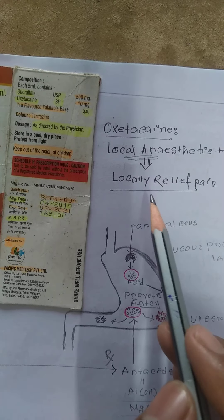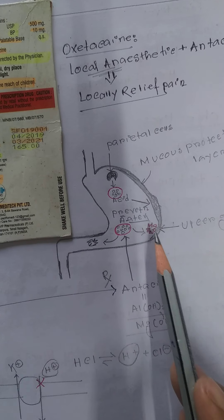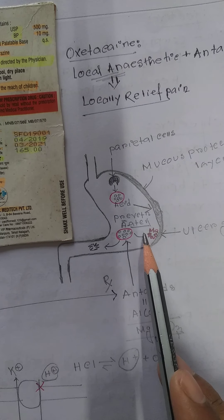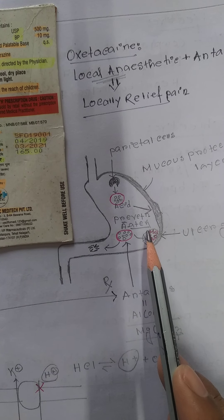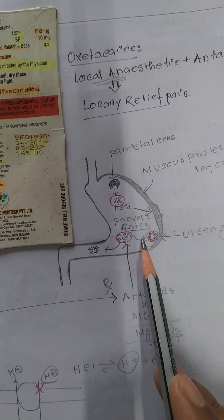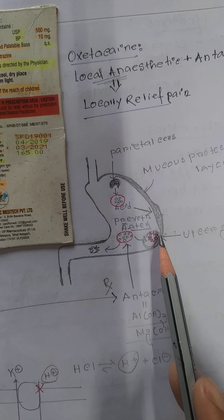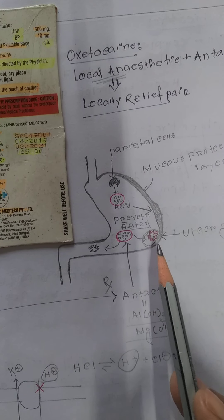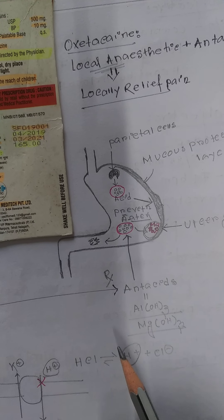Oxetocaine provides local pain relief. When inflammation is happening, if you use oxetocaine, if you take oxetocaine suspension, it will help to relieve pain locally.